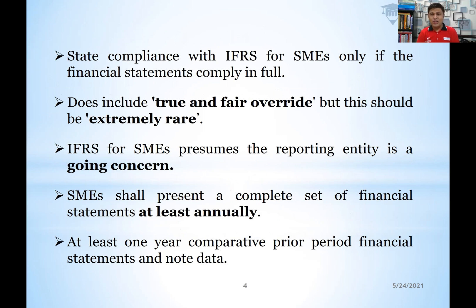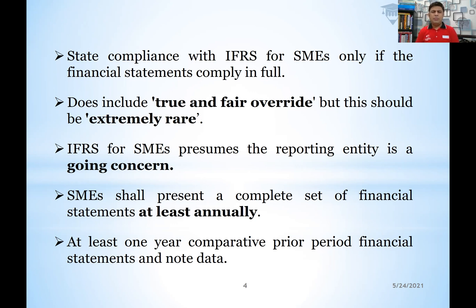An important concept from IFRS Section 1 is that it does include true and fair override, but it should be extremely rare. True and fair override means we have to depart from the standard. The full version of IFRS allows departure from the standard to some extent.